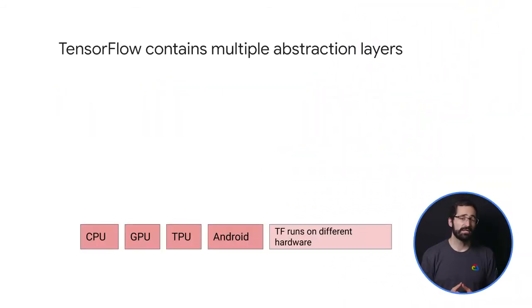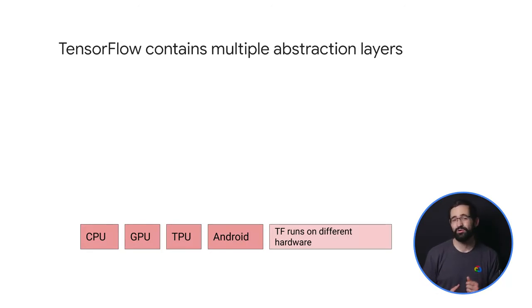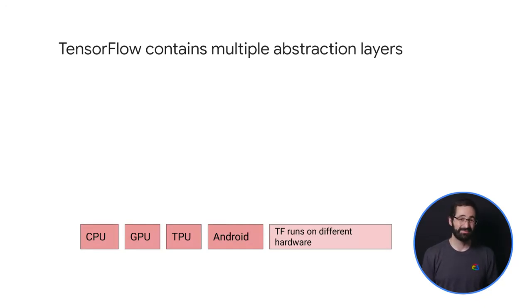The lowest layer of abstraction is the layer that's implemented to target the different hardware platforms. And unless your company makes hardware, it's unlikely that you'll do much at this level, but it does exist.